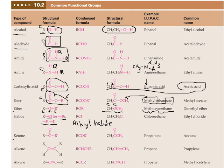A ketone has two carbon-containing groups with a C=O in the middle. The simplest ketone is acetone, whose systematic name is propanone — 'prop' meaning three carbons, 'one' being the suffix for ketone. Propanone is the simplest possible ketone because you must have R groups on both sides of the carbonyl, requiring a minimum of three carbons.